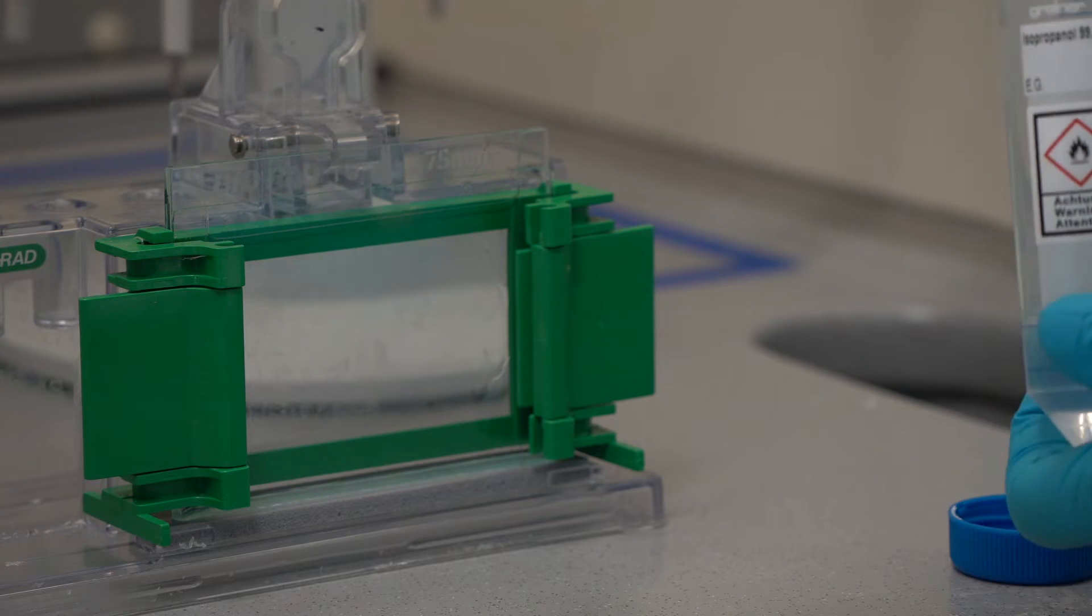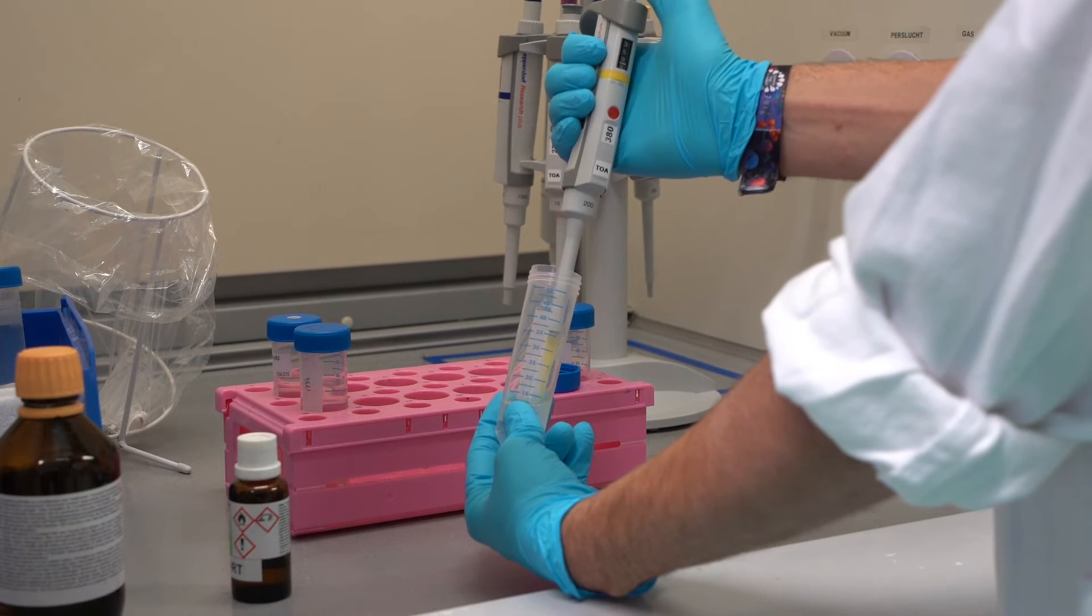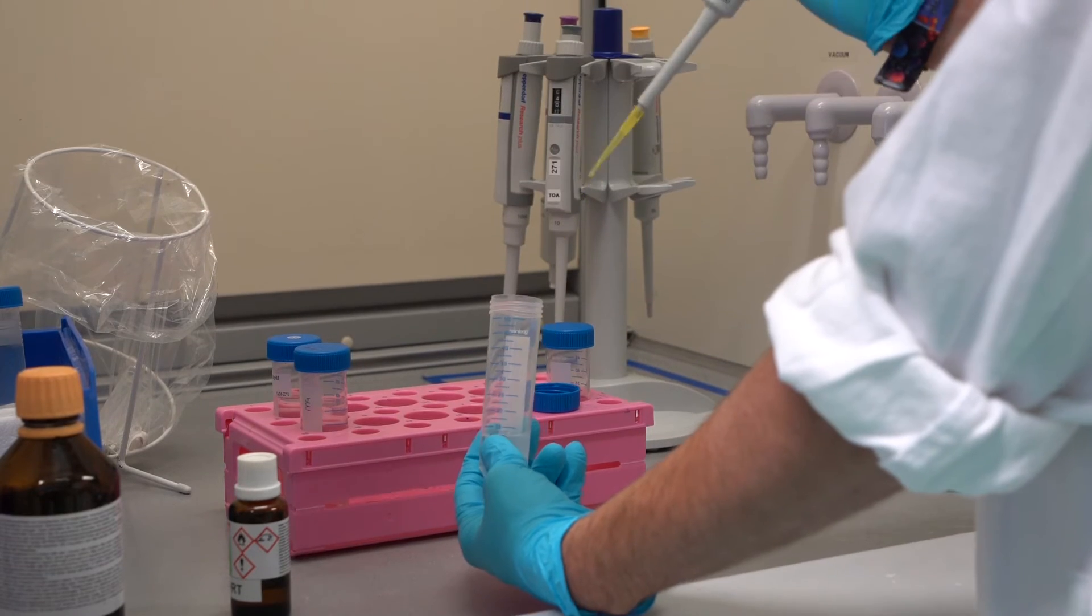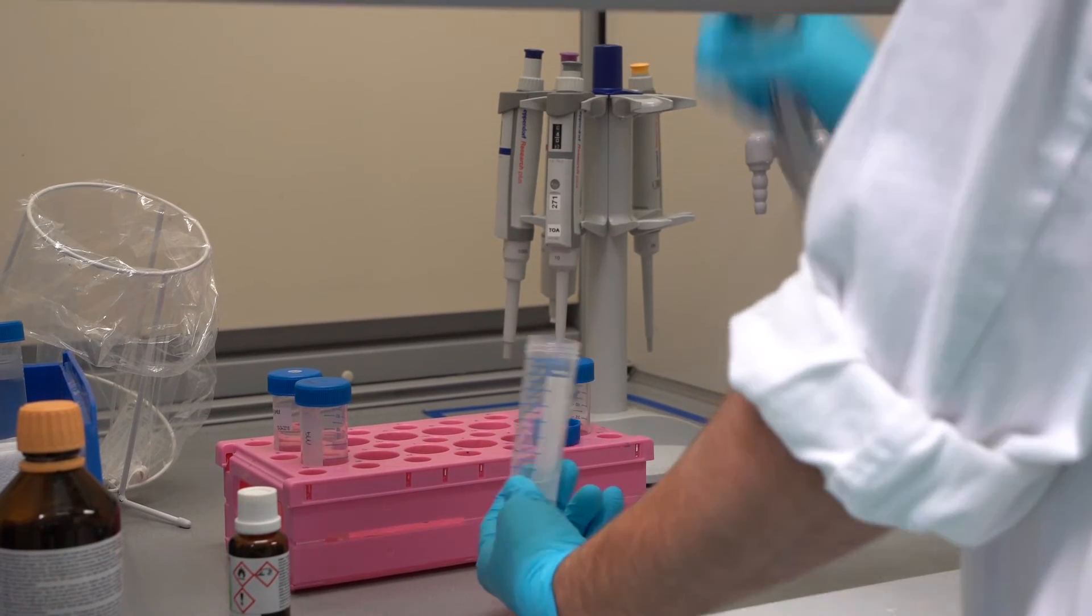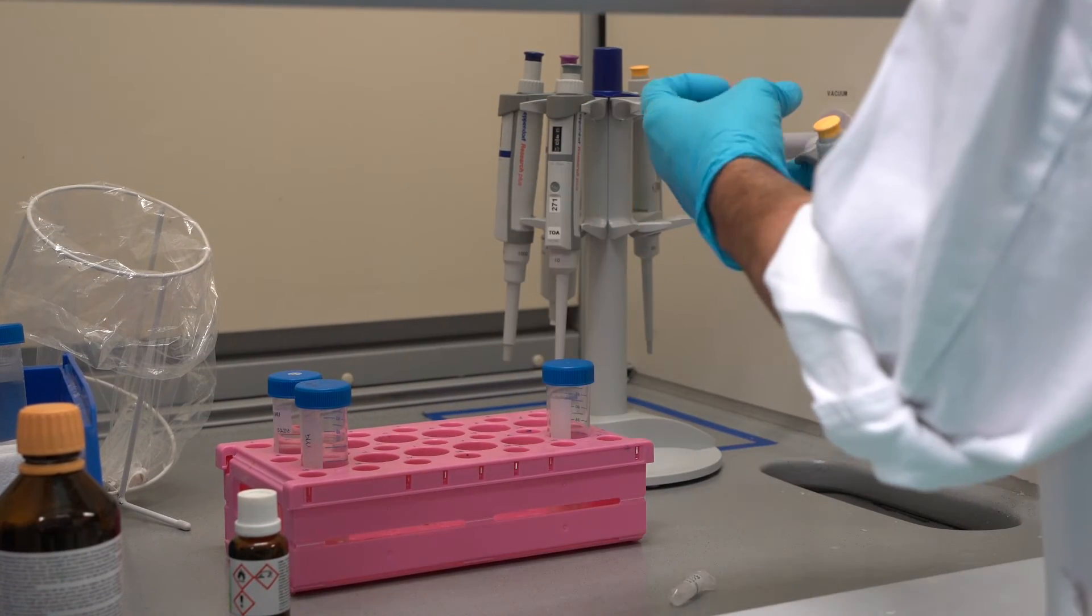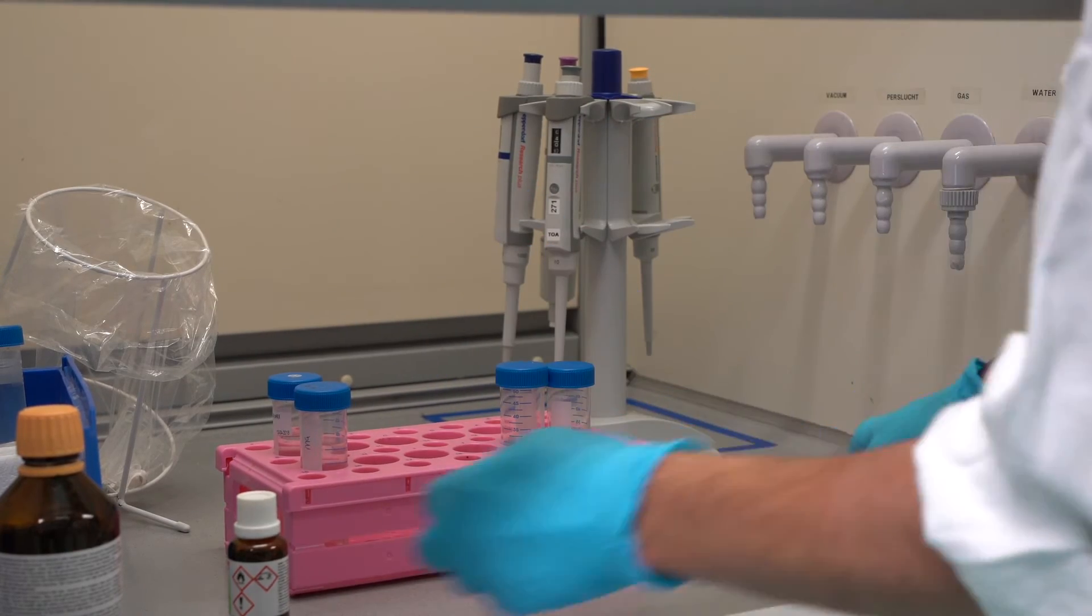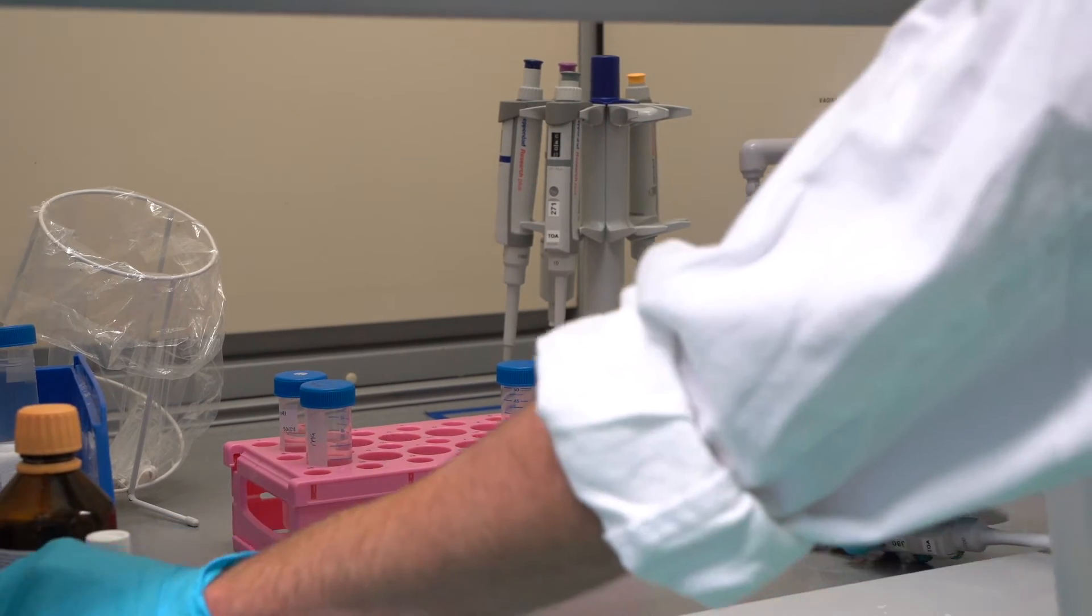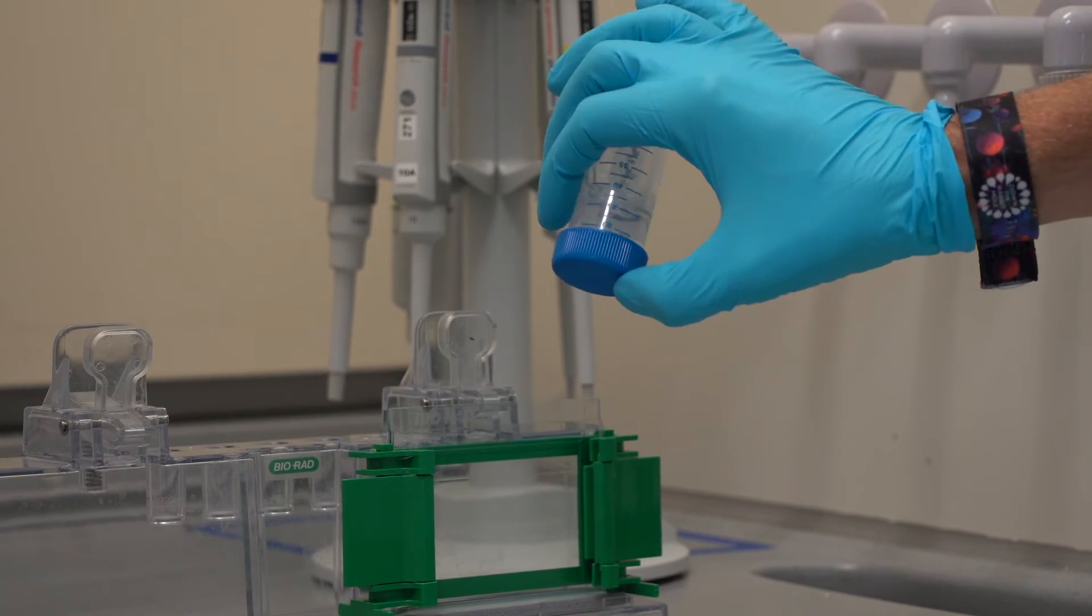The stacking gel is made during the polymerization of the running gel. Calculate the volumes needed for making the gel. Pipette the right amounts together in a falcon tube. Pipette the Temed and APS in last as this ensures the polymerization of the gel. Mix the solution by inverting two times.